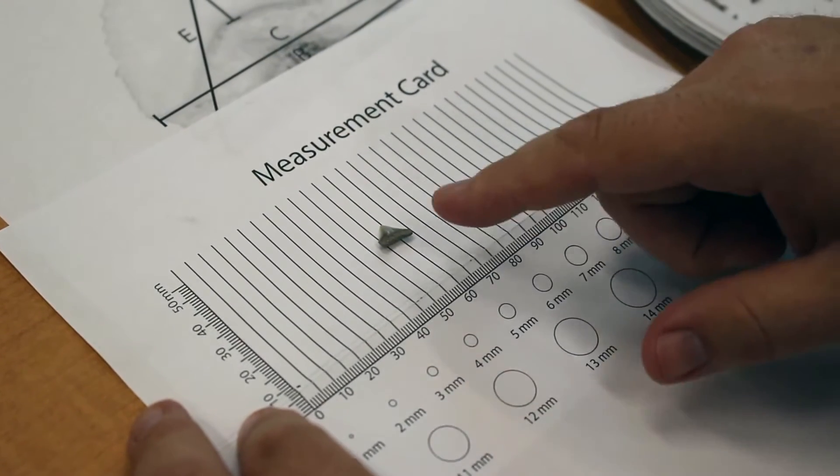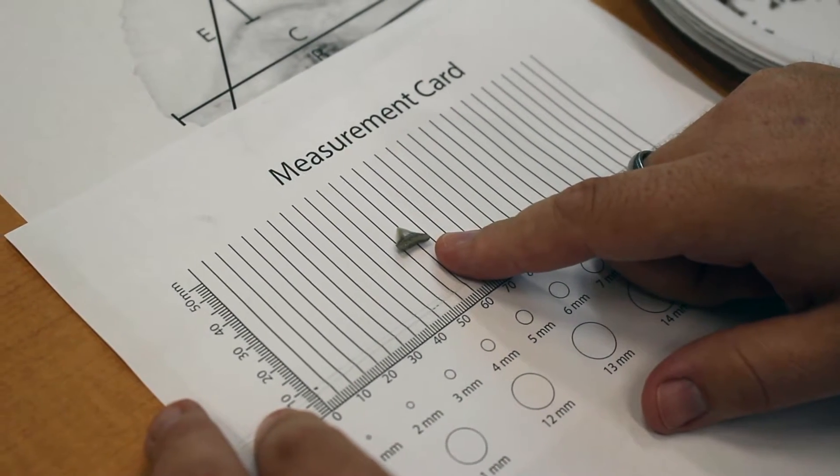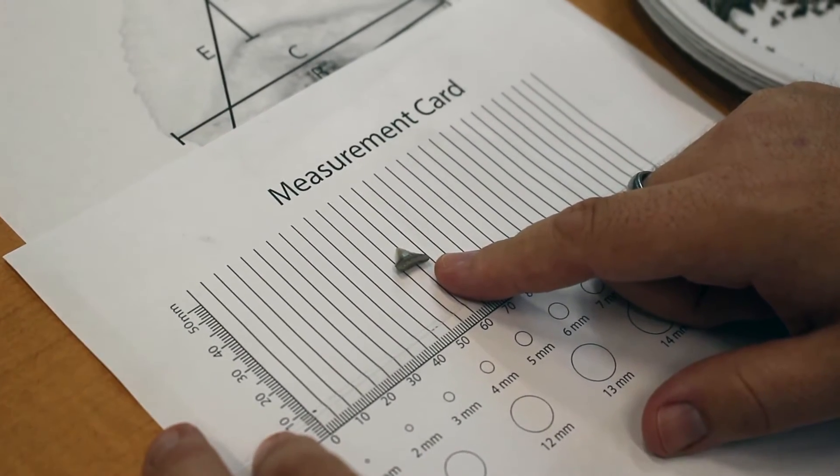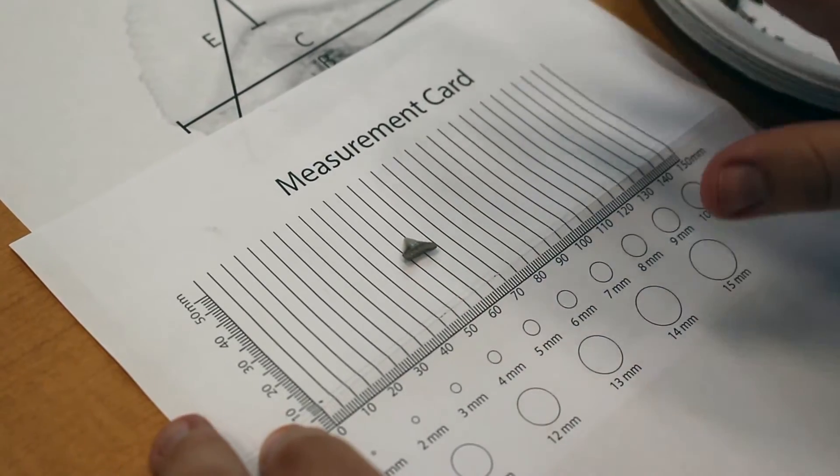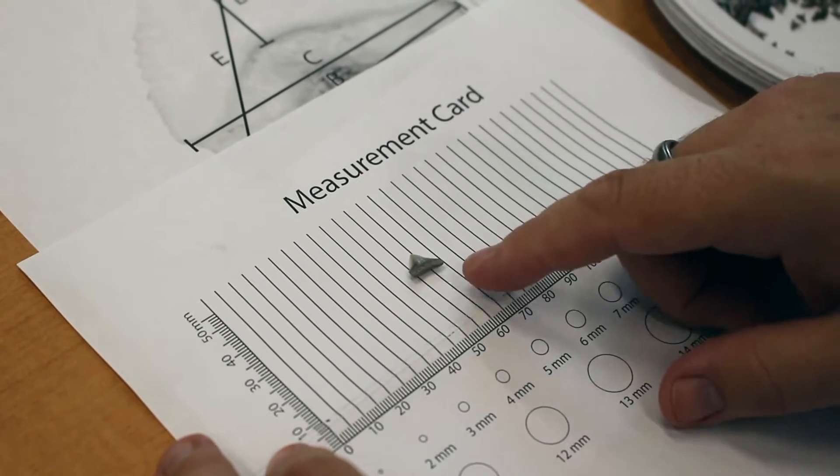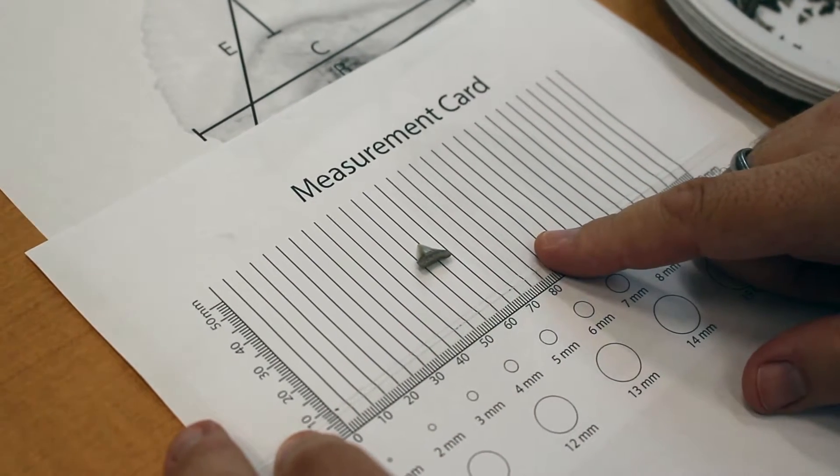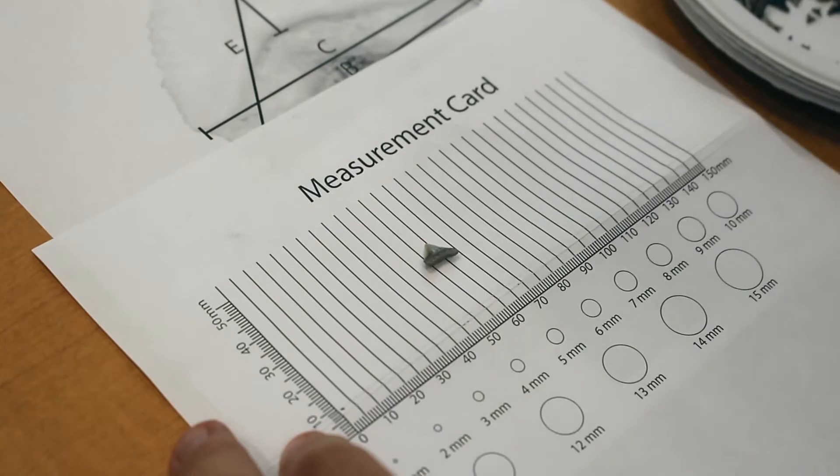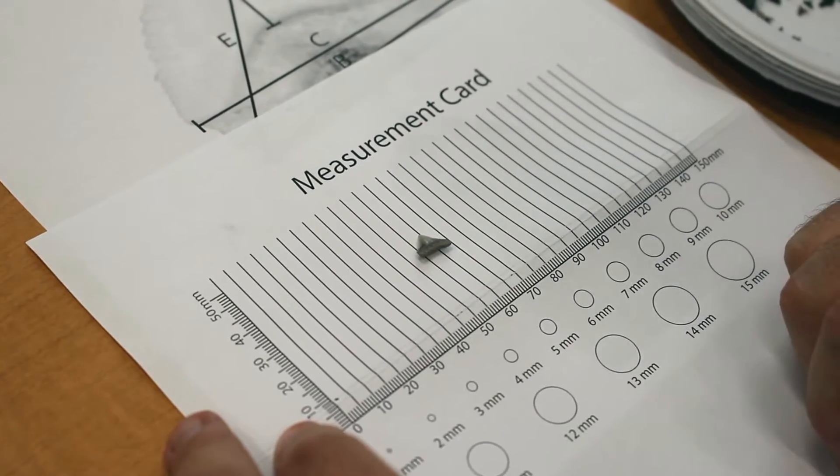And anything smaller than this, you might actually want to use a document camera to show up on your smartboard or on your projector screen and then maybe on a piece of paper trace it and do the measurements. This card is going to be kind of tough for some of the really small teeth that you're going to find, which there's going to be a lot of those.